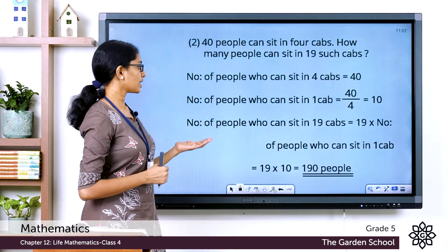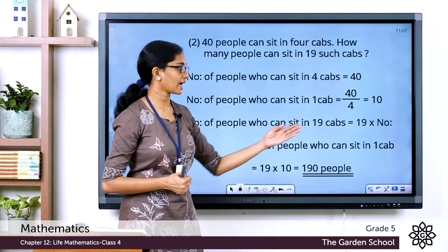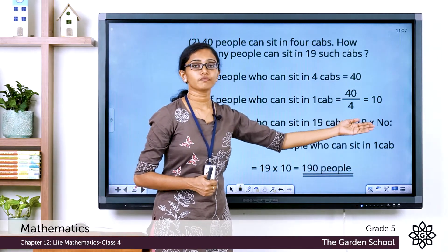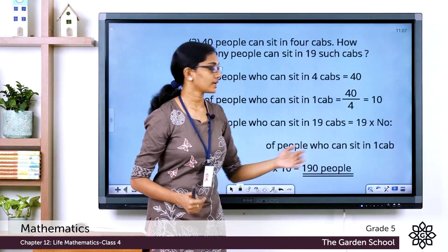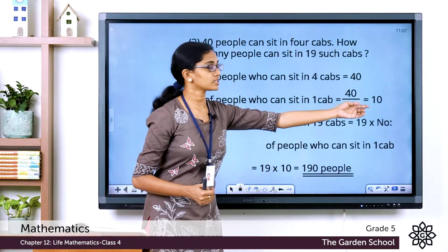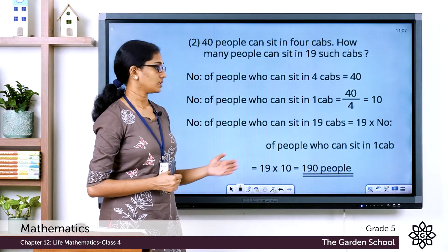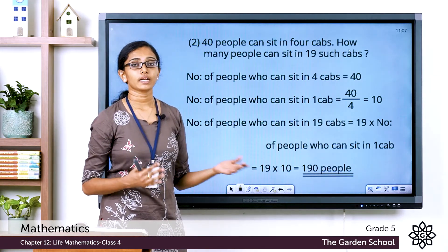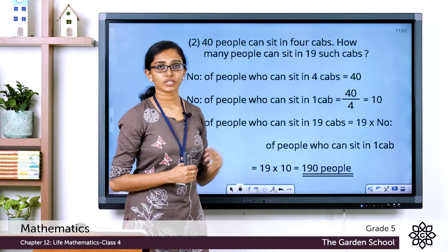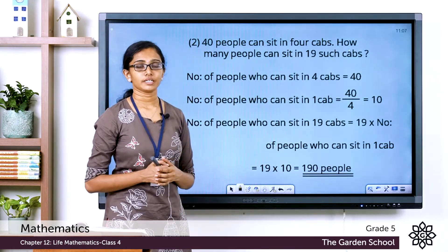How do we find out the number of people who can sit in 19 caps? The required number of caps multiplied by the number of people that can be seated in 1 cap — that is 19 into 10 — equals a total of 190 people. So in 19 such caps, a total of 190 people can be seated.